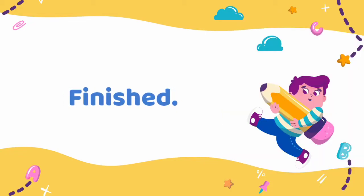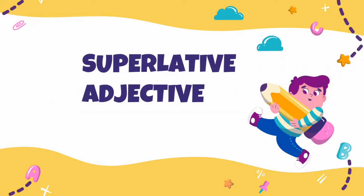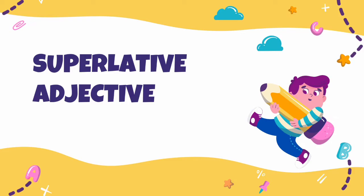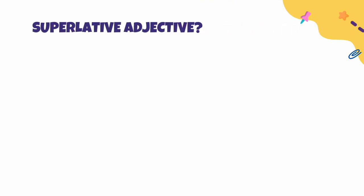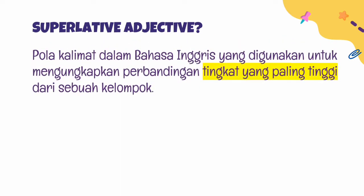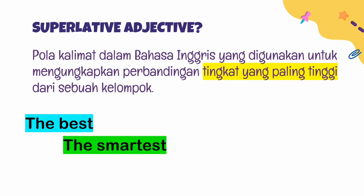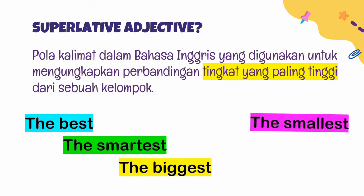Today's topic is superlative adjective, lesson 12, grade 4. What is superlative adjective? Superlative adjective adalah pola kalimat dalam bahasa Inggris yang digunakan untuk mengungkapkan perbandingan tingkat yang paling tinggi dari sebuah kelompok. Jadi superlative adjective adalah kata sifat yang paling tinggi. Example: the best — paling baik atau terbaik, the smartest — paling pintar, the biggest — paling besar.